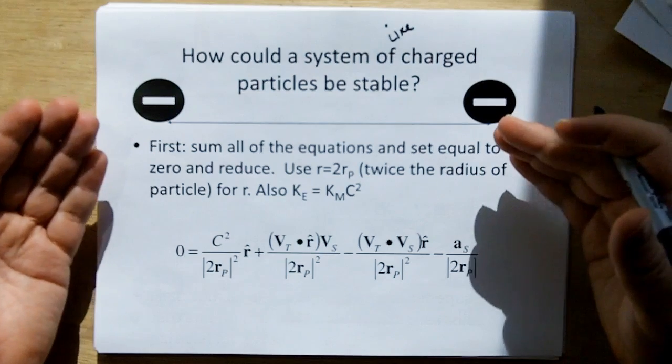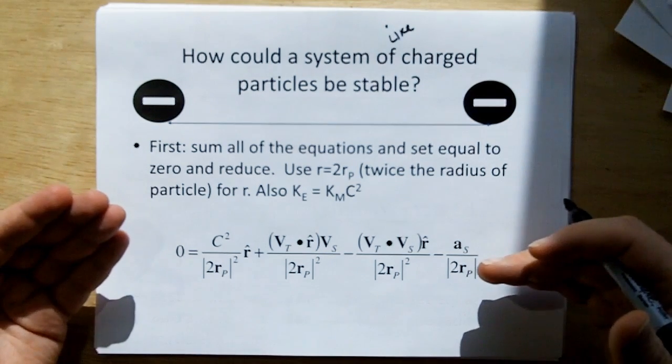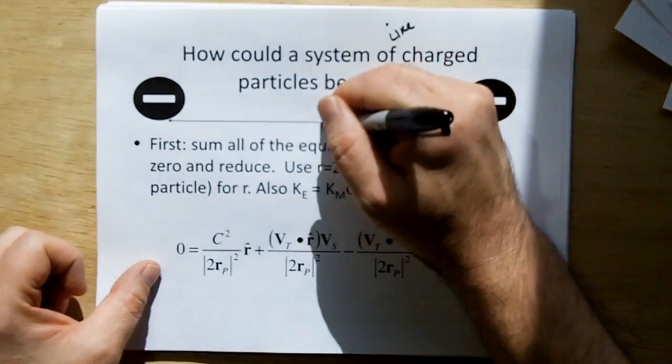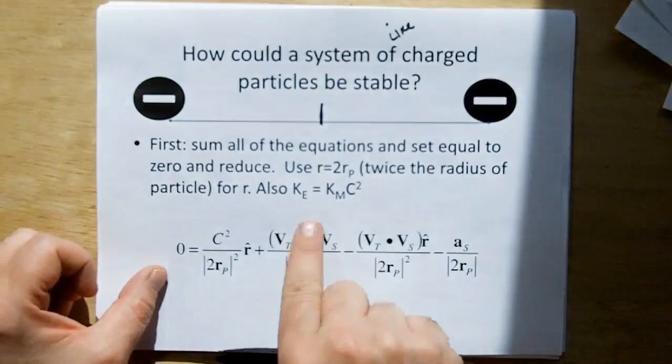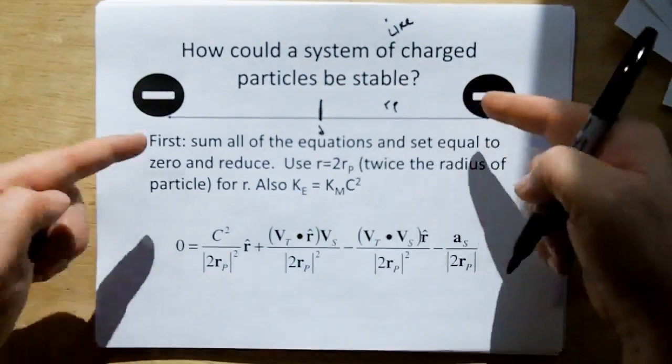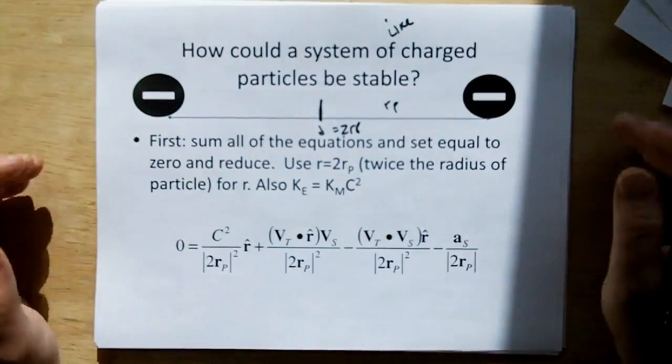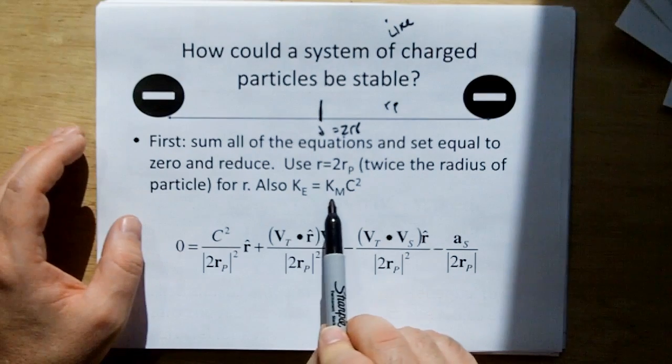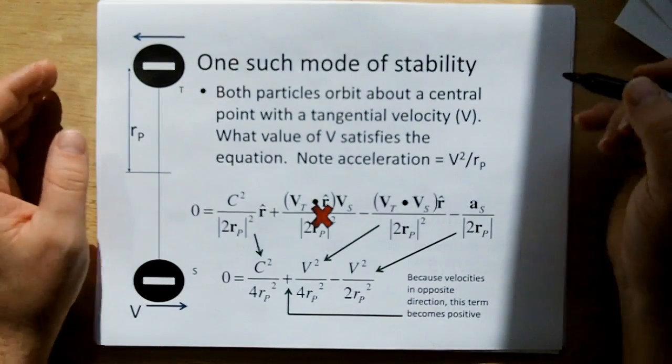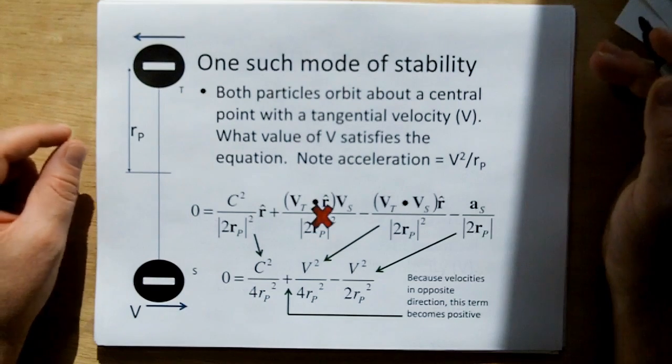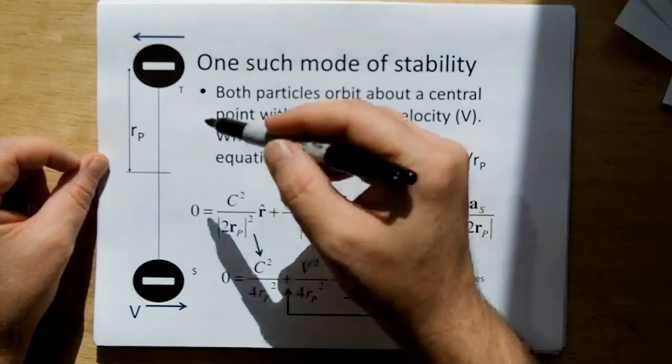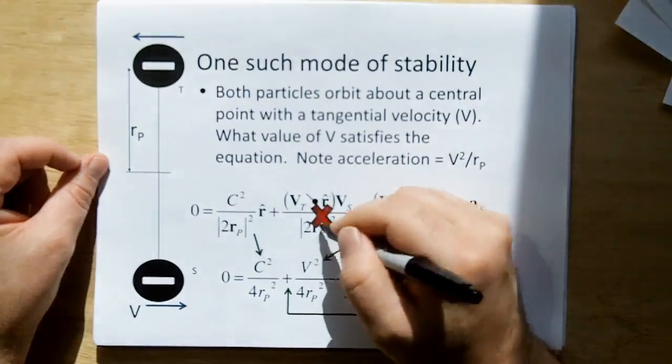So how can a system of like charges be stable? Well first, if we sum all the equations of new electromagnetism together and sum them to zero so all the forces cancel, and we assume that this particle - we're going to use for the distance between the particles, we're going to use 2RP, twice the radius of the particle. We'll explain that in a minute. And also we set that KE is also equivalent to KM times C squared, and then we can reduce it to this. Now one such mode of stability is both particles orbit about a central point with a tangential velocity. So the question is, what value of V satisfies the equation?